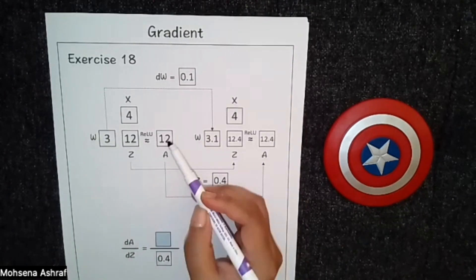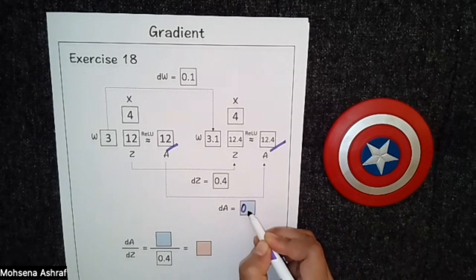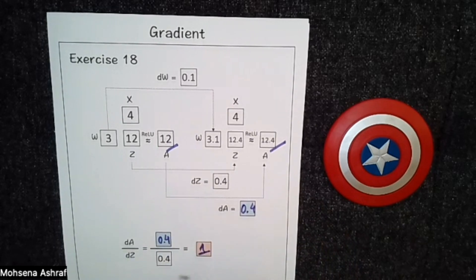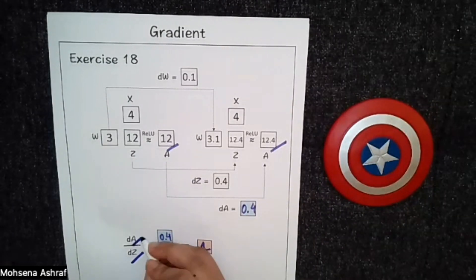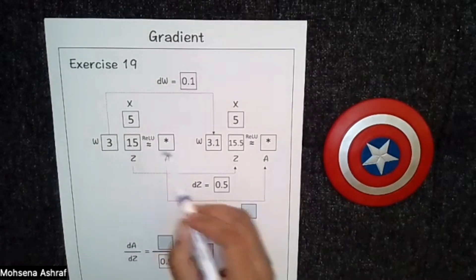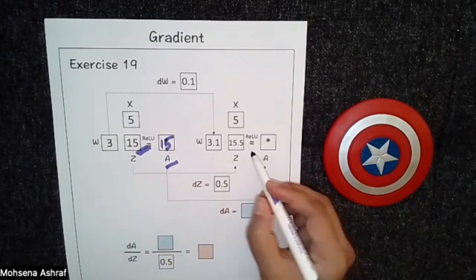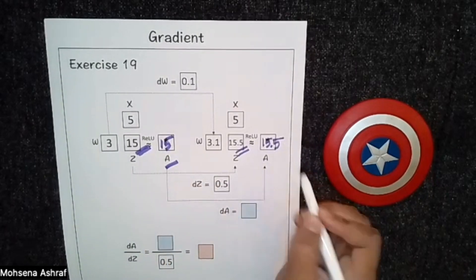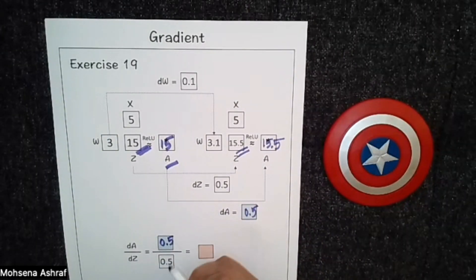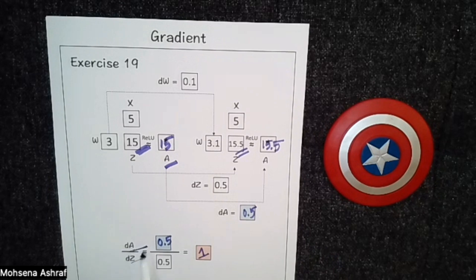Next exercise, the value of a is 12 and the updated value of a is 12.4. So da = 0.4. We put da = 0.4, and da/dz gives us 1. So if we change dz by 1 unit, a will also change by 1 unit. Next, z = 15 and 15.5, both positive, so a = 15 and a = 15.5. So da = 0.5. And 0.5 by 0.5 = 1, so if we increase z by 1 unit, a increases by 1 unit.